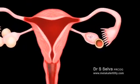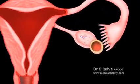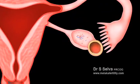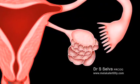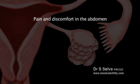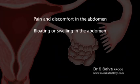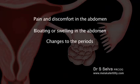Most ovarian cysts are small and harmless and do not produce any symptoms. Large cysts may cause problems and may have symptoms such as pain and discomfort in the abdomen, which may come and go but may last for long periods of time. Some women may notice the pain more after sex. Bloating and swelling in the abdomen. Changes to the periods — periods may become irregular, painful, heavier or lighter than normal.